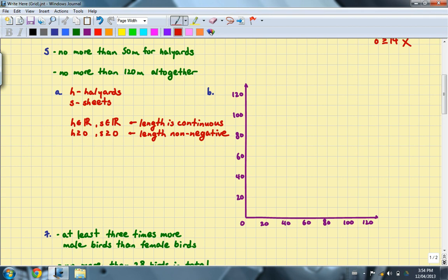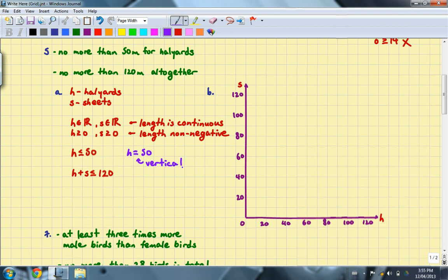Part B says to create a graphical model of this situation and use it to choose two possible combinations of lengths of rope. So in order for us to do that, we need to first set up our inequalities. And there will be two of them. The first one is that H must be less than or equal to 50. And the second inequality is that H plus S must be less than or equal to 120. So for us to graph these, this is actually pretty easy because if I were to set up my variable H here and my variable S as a vertical axis, the associated equation will be H equals 50, and that will be vertical. So go ahead and draw that in.